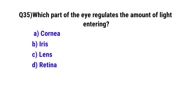Question number 35. Which part of the eye regulates the correct amount of light entering? The correct option is D. Retina.